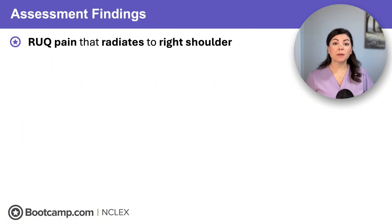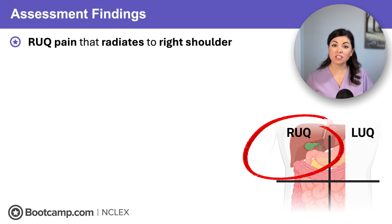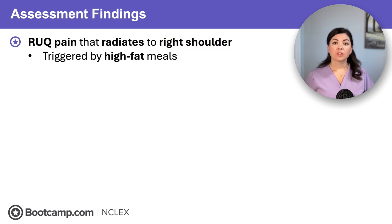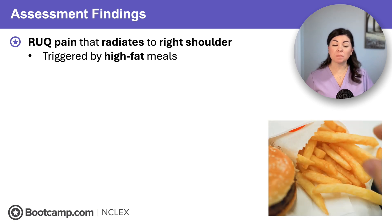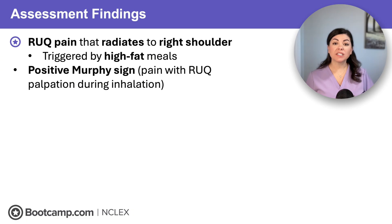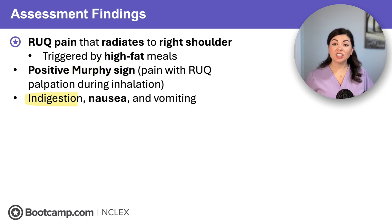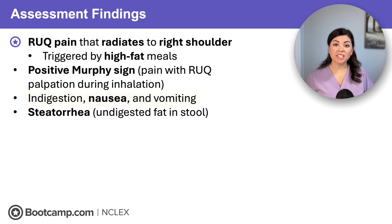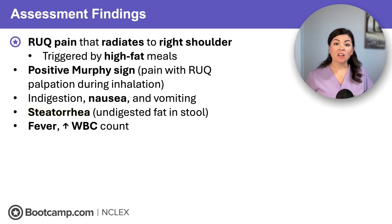With cholecystitis, clients will typically report right upper quadrant pain that radiates to the right shoulder. Remember, the gallbladder is on the right side, so the pain is on the right side. The pain typically flares up after fatty meals because fat triggers bile release. We will also see a positive Murphy sign, which is worsened pain when the right upper quadrant is palpated during inhalation. Other findings include indigestion, nausea and vomiting, steatorrhea — which is fatty pale stools from poor fat digestion — as well as fever and an elevated white blood cell count from inflammation and infection.